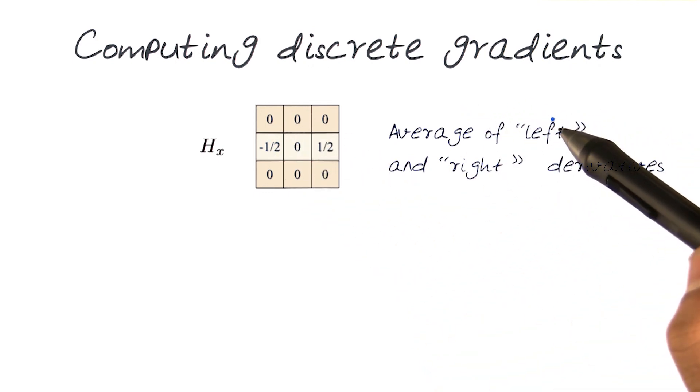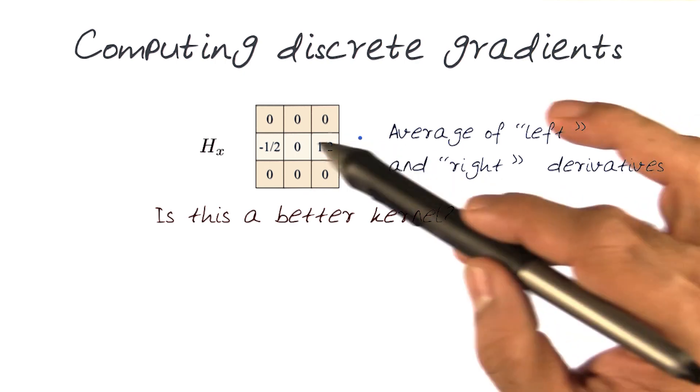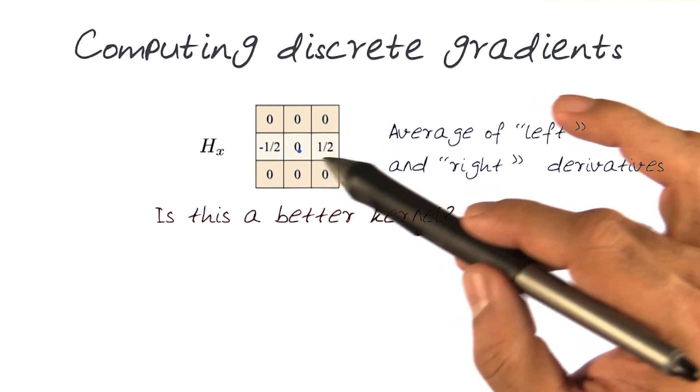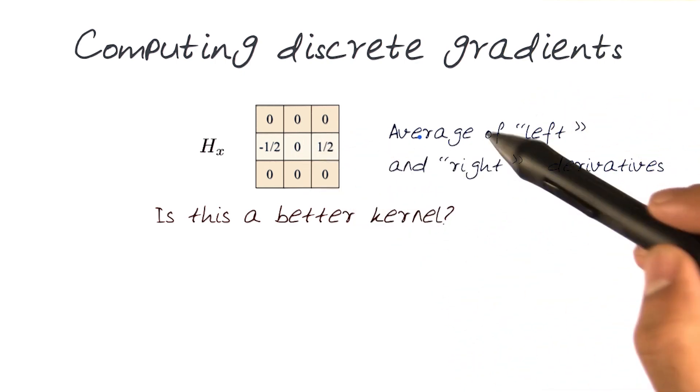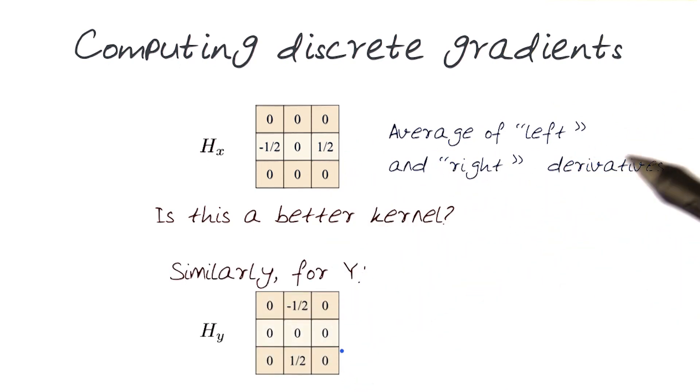It's basically an average of the left and the right derivatives. So is this a better kernel? Well, it does have some features, because it does have a well-defined midpoint and can be used for doing various types of symmetry calculations. Transposing this, we can get the same kind of kernel in the y direction.